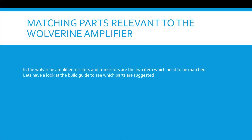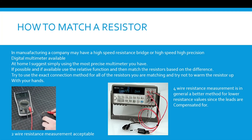There is value to matching resistors. During manufacturing, a company might use a high-speed resistance bridge or precision digital multimeter to measure parts as they're produced and group them accordingly. At home, simply use the most precise multimeter you have. If possible, use the relative function and match resistors based on their difference. Try to keep the connection method consistent for all resistors and don't warm them with your hands. On the left is a two-wire measurement with a basic 3.5-digit handheld multimeter; on the right is a four-wire measurement with a 6.5-digit multimeter, the HP 34410A. Four-wire resistance measurement is generally better for lower resistance values since lead resistance is compensated for.